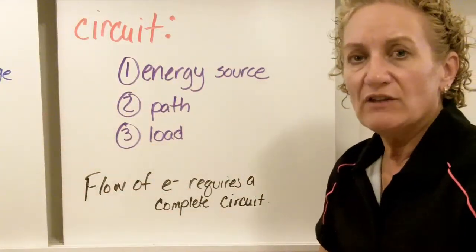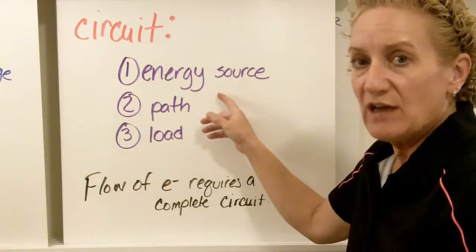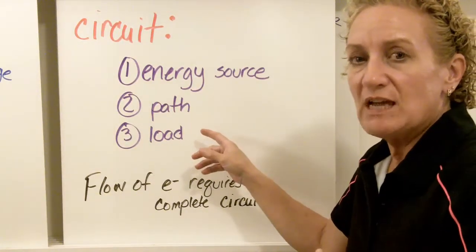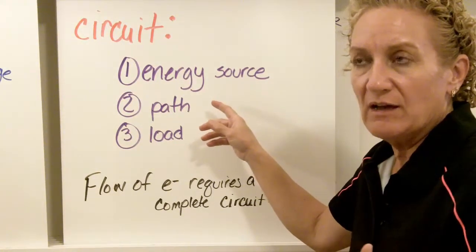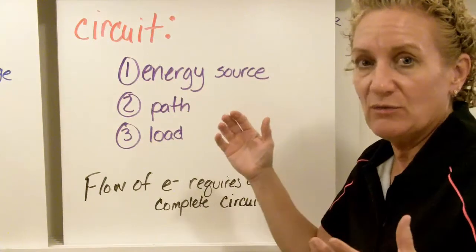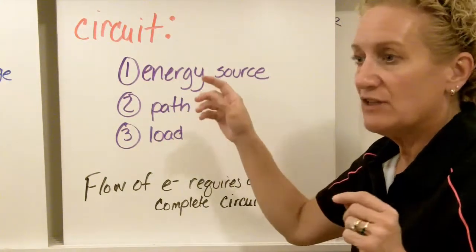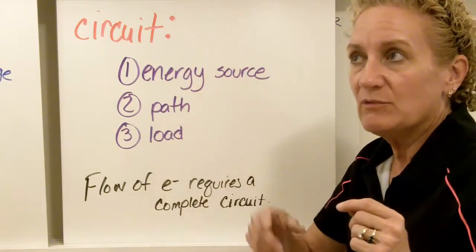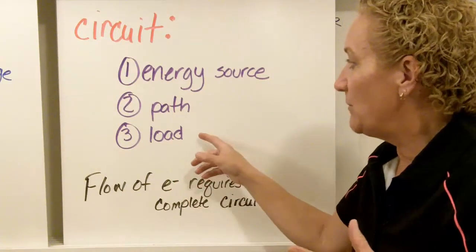So in order to have an electrical circuit you need three specific pieces. You need an energy source, you need a path, and you need a load. Let's kind of break this down. An energy source usually is a battery or it's plugging something into the wall which gives you the energy from the power plant. The path is actually the route the electrons are going to take as they go to impact the load.